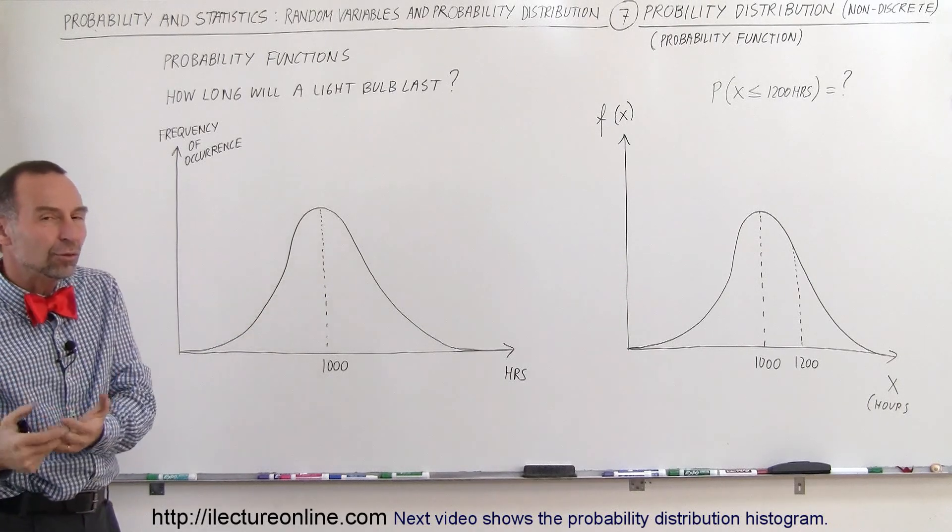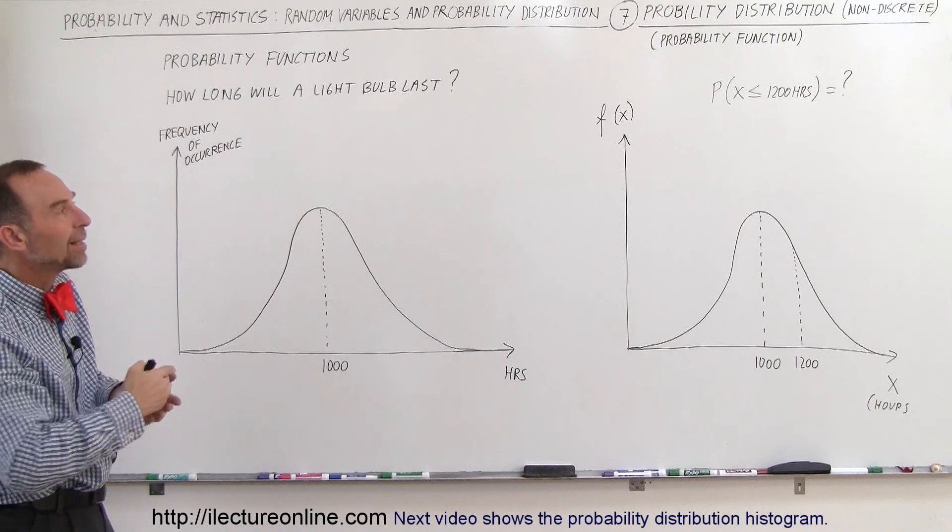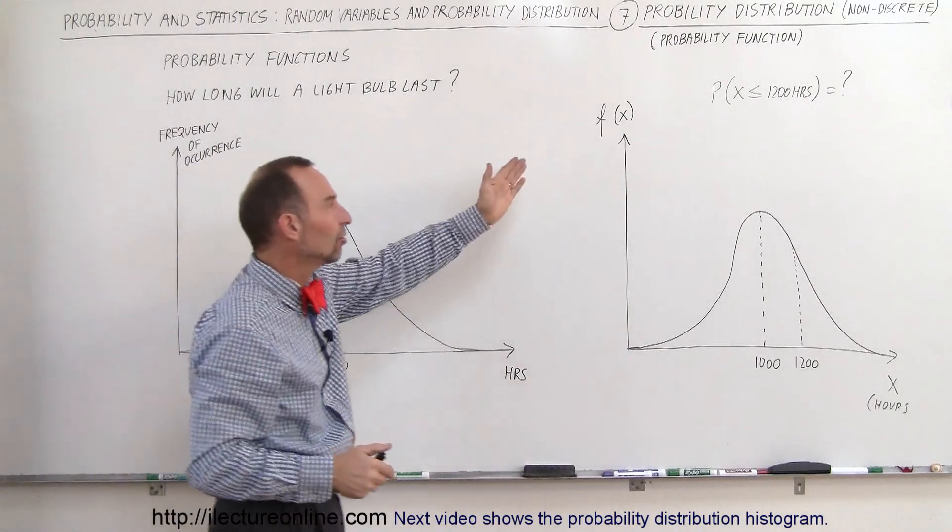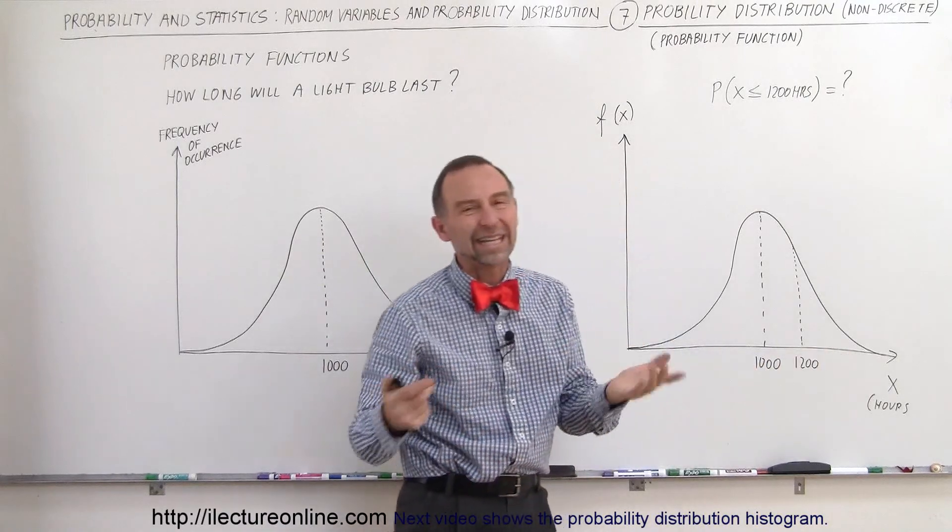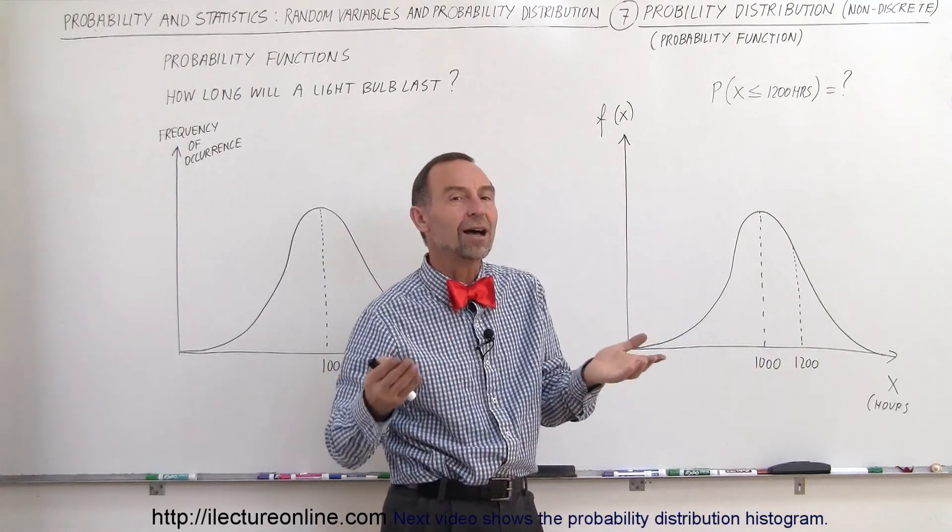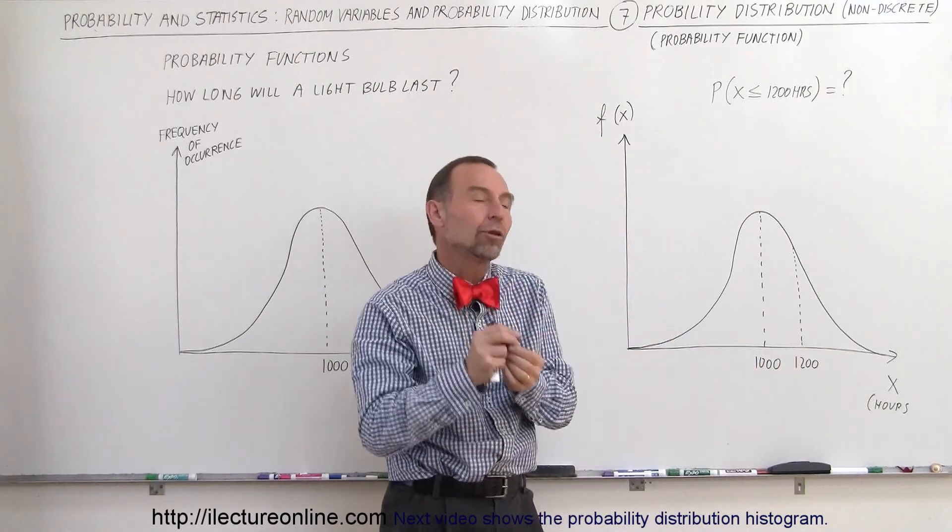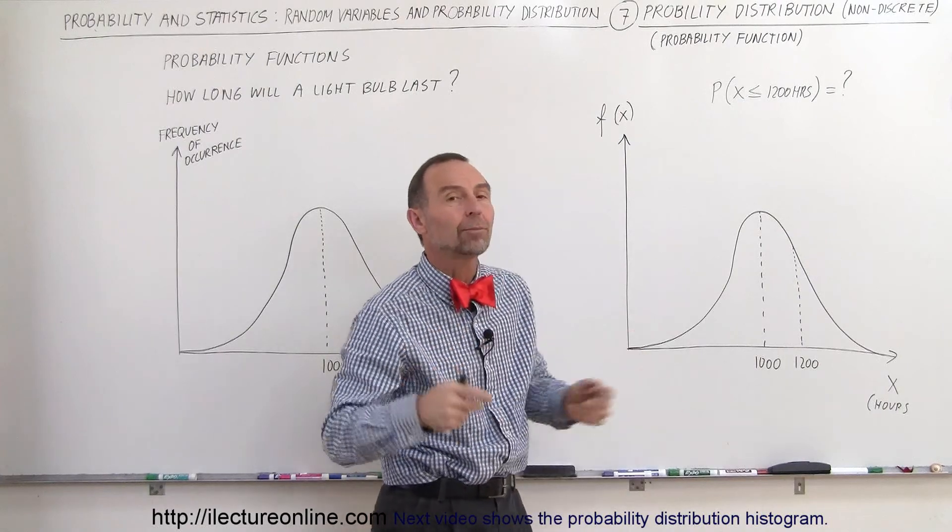So what we can then do is we can draw what we call a probability function. So the vertical axis is a function of x, x will be the number of hours or in essence the amount of time, and it would be an integer number of hours but the total amount of time the light bulbs would last.